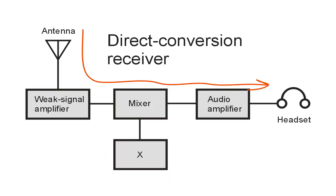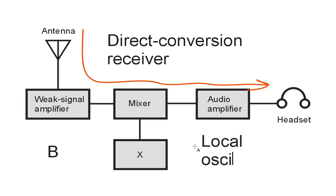The answer is B. It is a local oscillator, also known as an LO. The signal from this is variable. As we vary this frequency, the signal that comes in mixes with it, producing beat frequencies that we can hear as audio output.